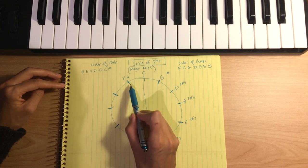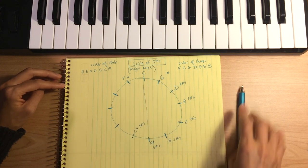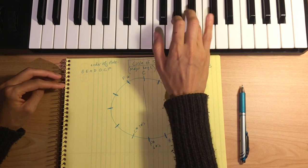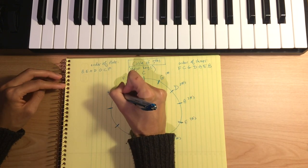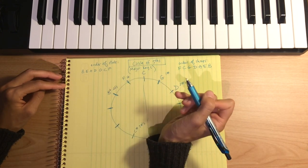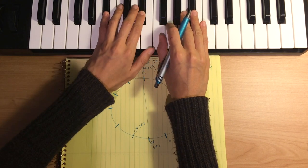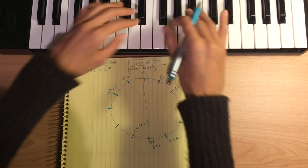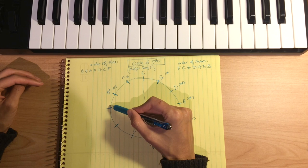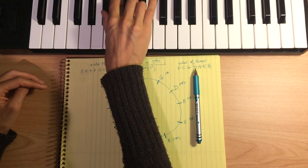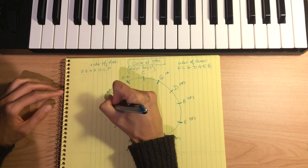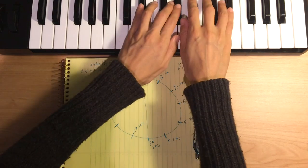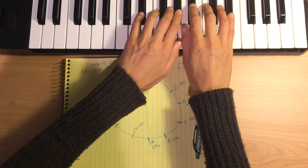Going up a perfect fourth from F, we land on B flat. B flat major is the key that has two flats in its key signature: B flat and E flat. Going up a perfect fourth in B flat major — one, two, three, four — we get to E flat major. E flat major has three flats: B flat, E flat, and A flat.